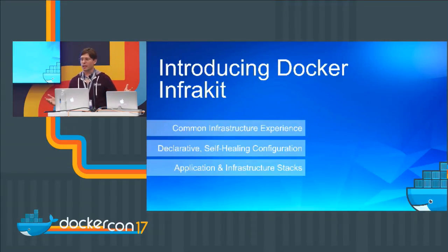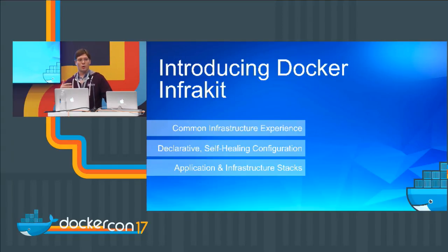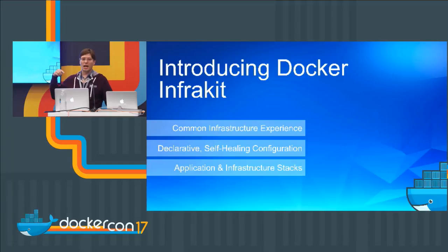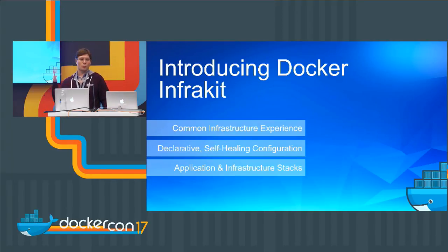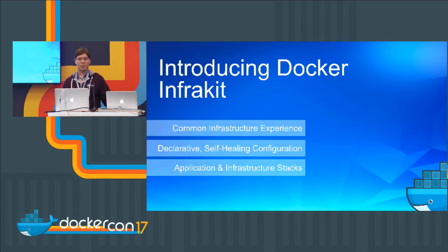So Docker InfraKit — who's familiar with Docker Machine? One of the biggest requests that the Docker team had for Docker Machine was to make it more declarative and to add more features. The Docker team looked at what they had done for Machine and decided to start a new project in order to achieve that, and that's InfraKit. InfraKit is designed to create, similar to Machine, a common experience across multiple cloud platforms — whether you're in EC2, Azure, or on your laptop — when you want to stand up a new Docker Engine host or application platform.